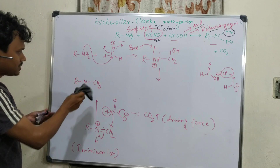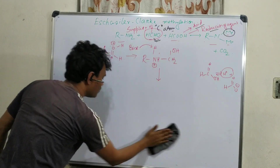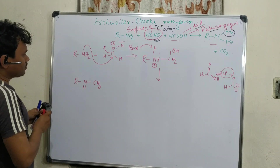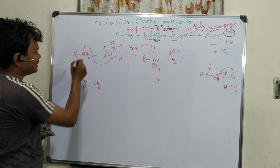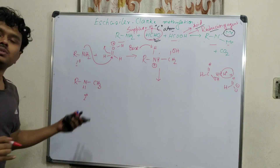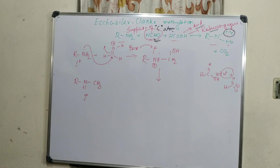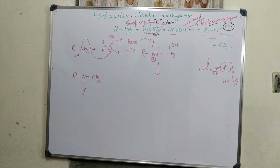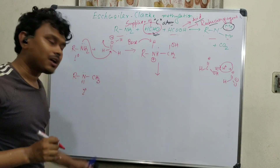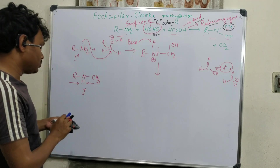Now comparing this amine product: the starting material is a primary amine and the product so far is a secondary amine. This secondary amine can also undergo the same reaction. Secondary amines are more efficient for nucleophilic attack because they are attached to two carbon atoms which, due to electronegativity difference, push electron density toward the nitrogen lone pair.